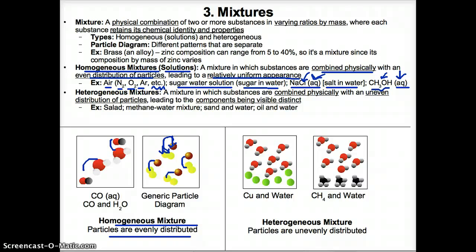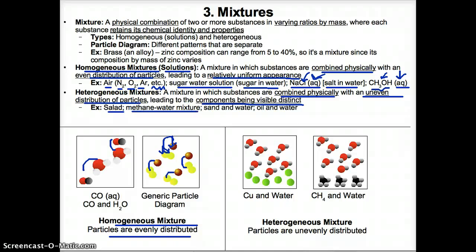A heterogeneous mixture is a mixture where substances combine physically with an uneven distribution of particles, leading to the components being visibly distinct and a non-uniform appearance. For example, salad is a heterogeneous mixture because you can tell apart tomatoes from lettuce. A methane-water mixture also has components you can tell apart. Sand and water is another example since they have uneven particle distribution and you can tell apart the sand from water. Oil and water is yet another example since they don't mix, so you can tell apart oil from water.